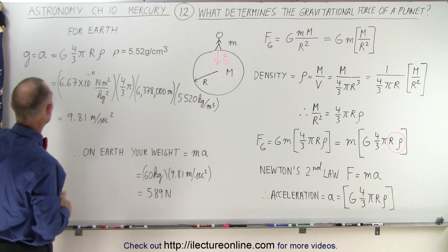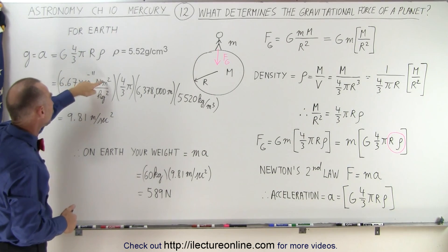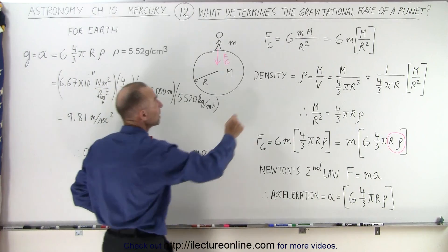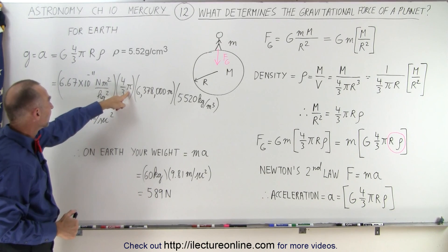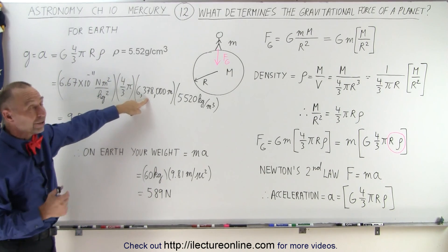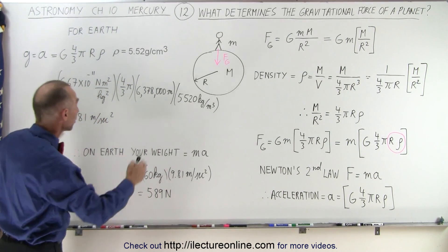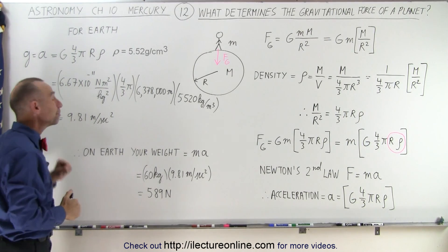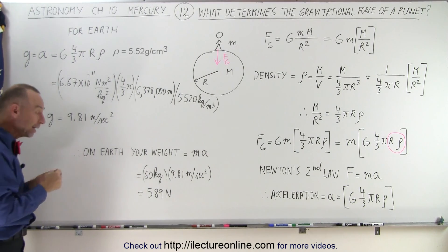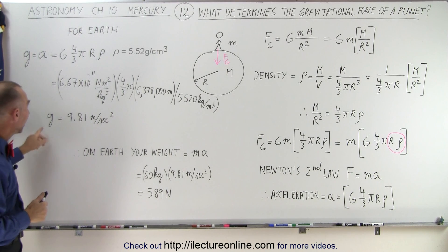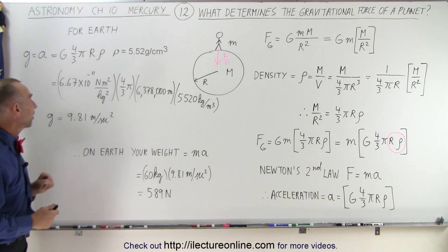For the Earth, the acceleration due to gravity — small letter g — equals the gravitational constant 6.67 times 10 to the minus 11 newton meters squared per kilogram squared, times four-thirds pi, times the radius of the Earth in meters, times the density of the Earth which is 5,520 kilograms per cubic meter. Multiplying all that together, we get approximately 9.81 meters per second squared — the acceleration due to gravity on the surface of the Earth. So the acceleration due to gravity depends upon the size of the planet, which relates to its mass, and the density of the planet.